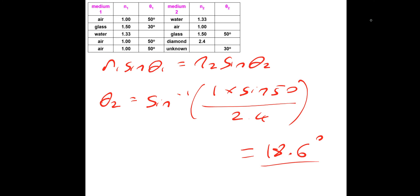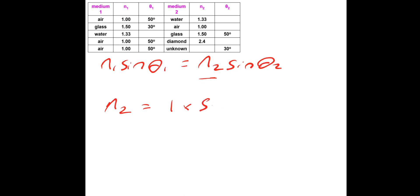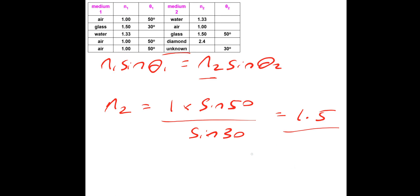For the last one we're finding the refractive index N2. Using N1 sinθ1 = N2 sinθ2, we get N2 = N1 sinθ1 / sinθ2 = 1 × sin50° / sinθ2 = 1.5. The medium is unknown but you should know that a refractive index of 1.5 would be some type of glass. Hopefully that makes sense — thanks for watching and I'll speak to you soon.